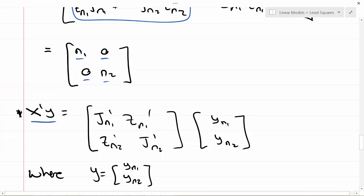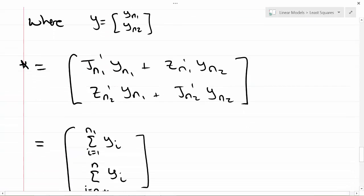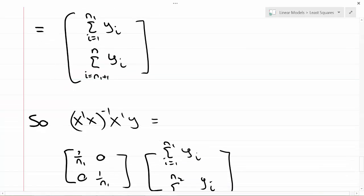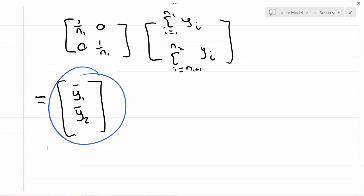Then x transpose y, you can multiply that out, and what you get is if I partition my y matrix into the first n_1 measurements and the latter n_2 measurements, then x transpose y is going to equal summation y_i from i equal 1 to n_1 and summation y_i from i equal n_1 plus 1 up to n_1 plus n_2. So the sum from group 1 and the sum from group 2. So (x transpose x)^(-1) x transpose y works out to be y-bar 1 and y-bar 2. Those are a couple of special cases to show that least squares is giving us exactly what we know and want it to give us in all these cases that we've worked out otherwise.